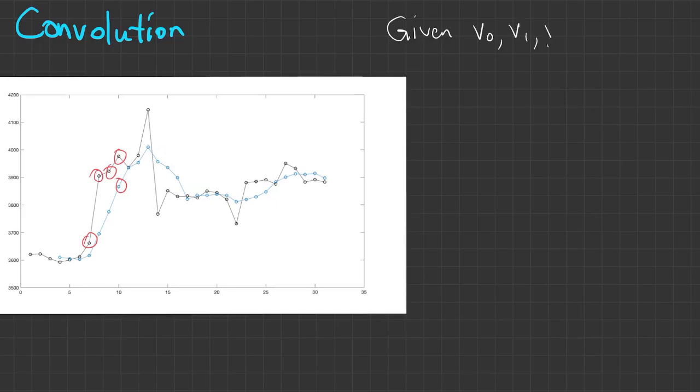So if we are given this original sequence of Vs, we can define a smoothed out sequence of Ws by taking this kind of moving average of the most recent values.